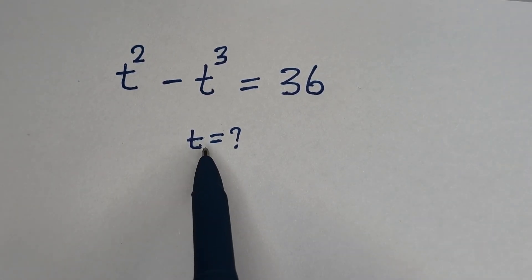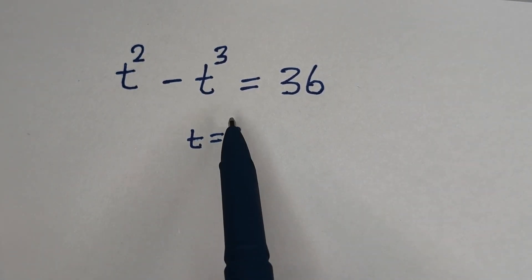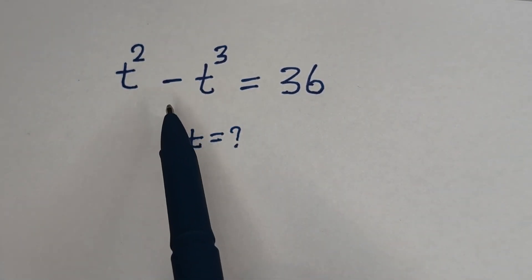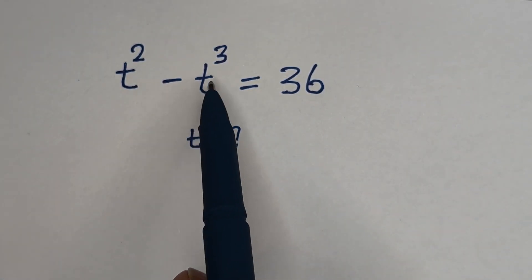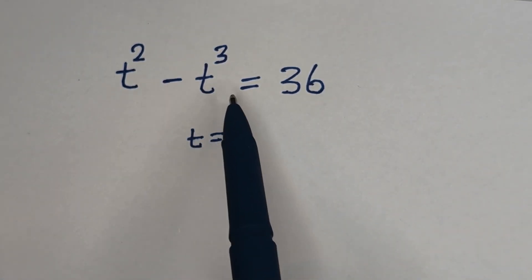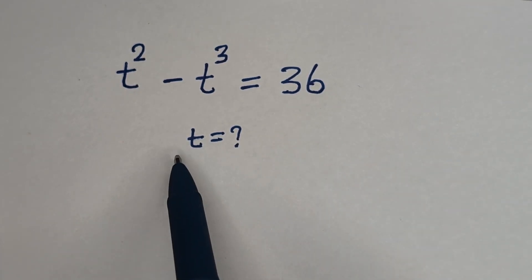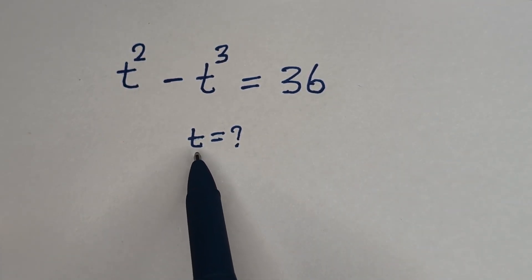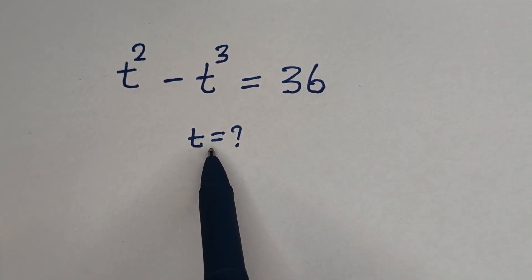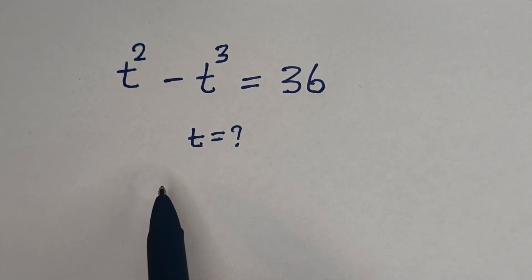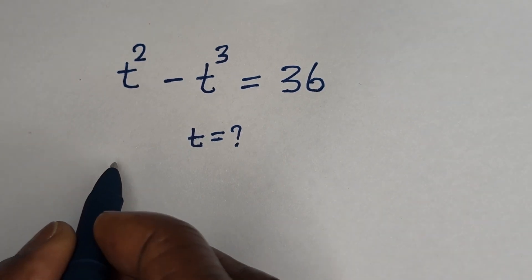Hello! How to solve for t in this equation: t squared minus t raised to power 3 is equal to 36. But before we proceed, please don't forget to like, share, comment, and subscribe to my channel. Thank you.